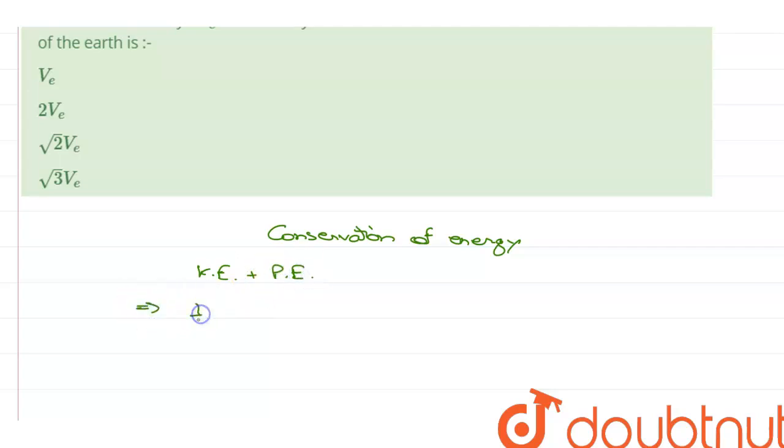So kinetic energy will be 1 by 2 m, 2V squared, minus GMm upon R. There should be an m in the numerator.